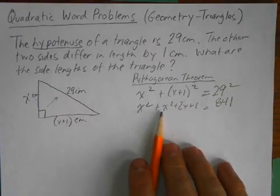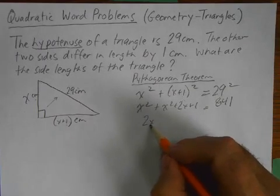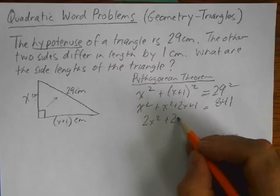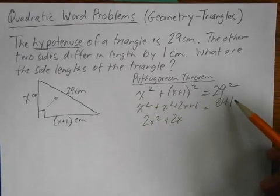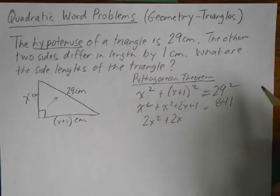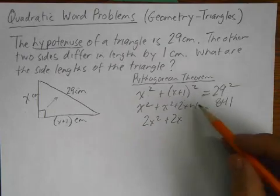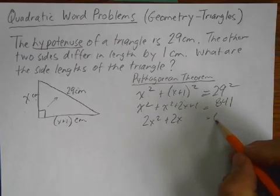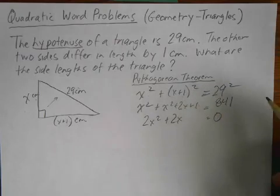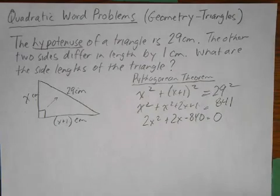So now we can simplify this a bit. We got two of these X squared terms. So I got 2X squared plus 2X. And I'm going to just save a step here. I know I want a zero here so that when I solve it, I can go directly and use the quadratic formula or factoring, whatever. So I'm going to subtract 841 from both sides. So I'm going to have a zero here. So 1 minus 841 is minus 840.